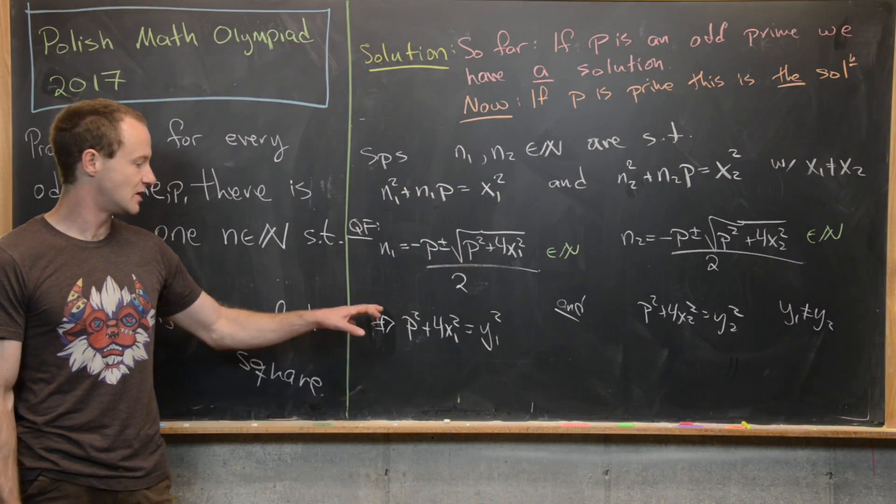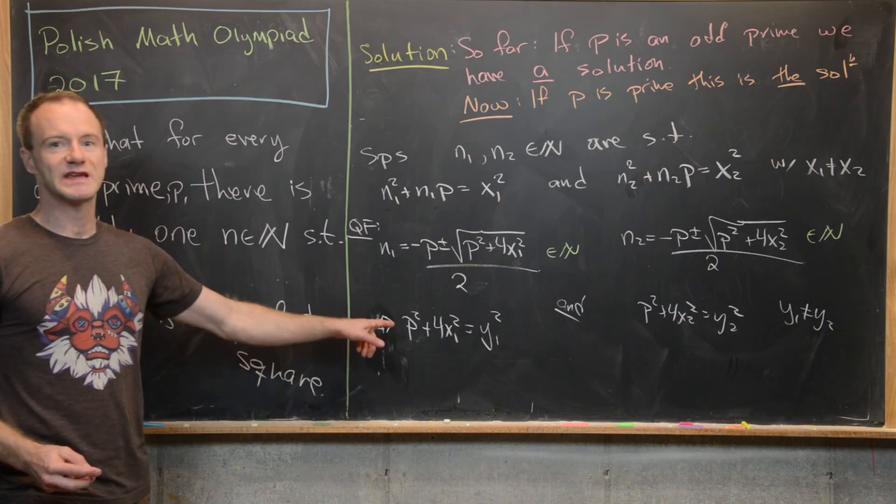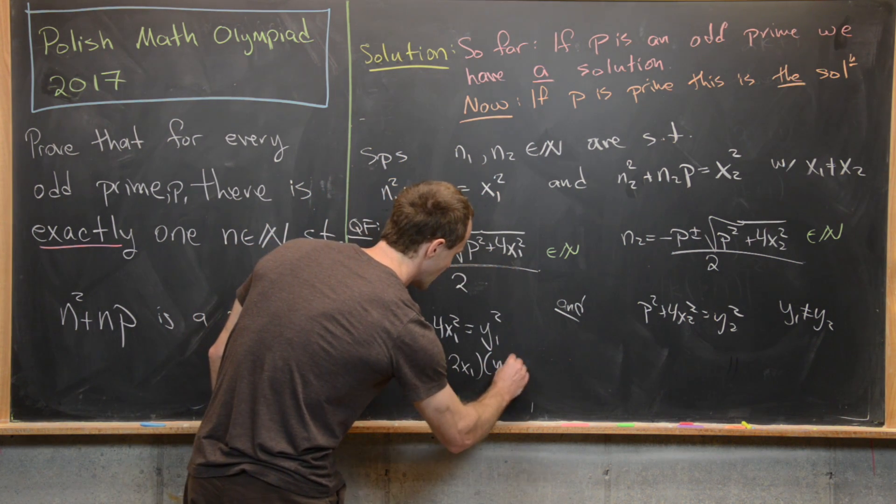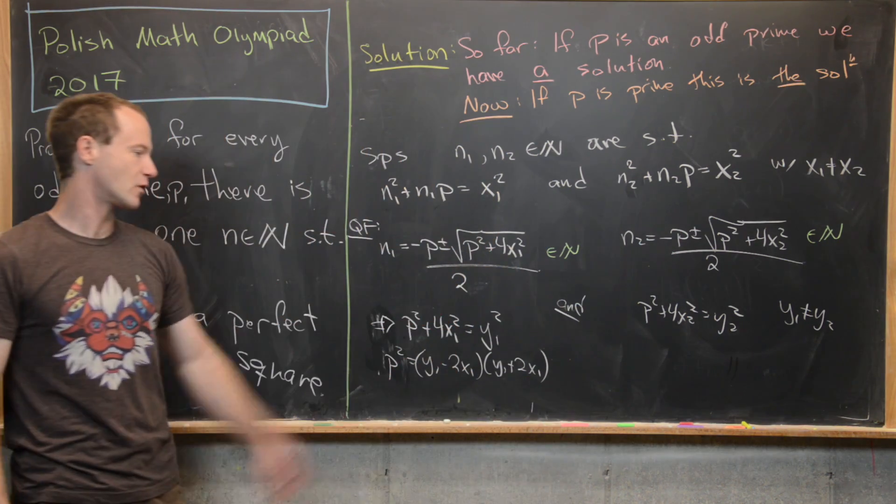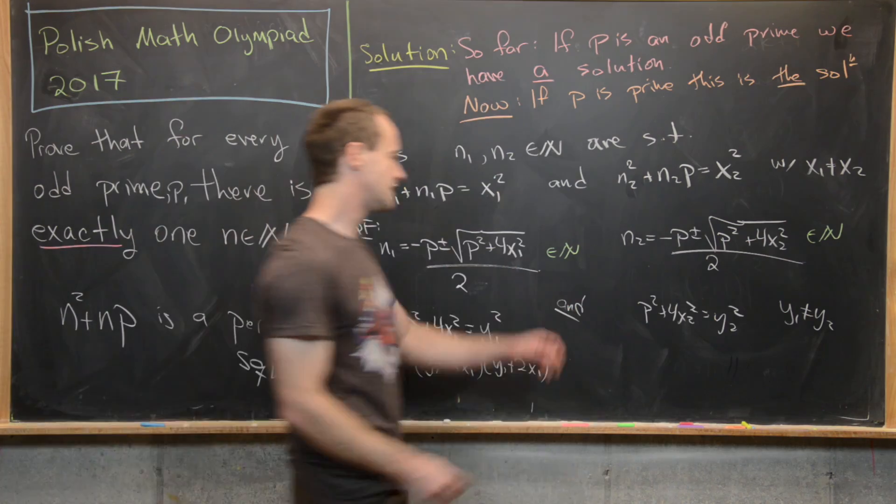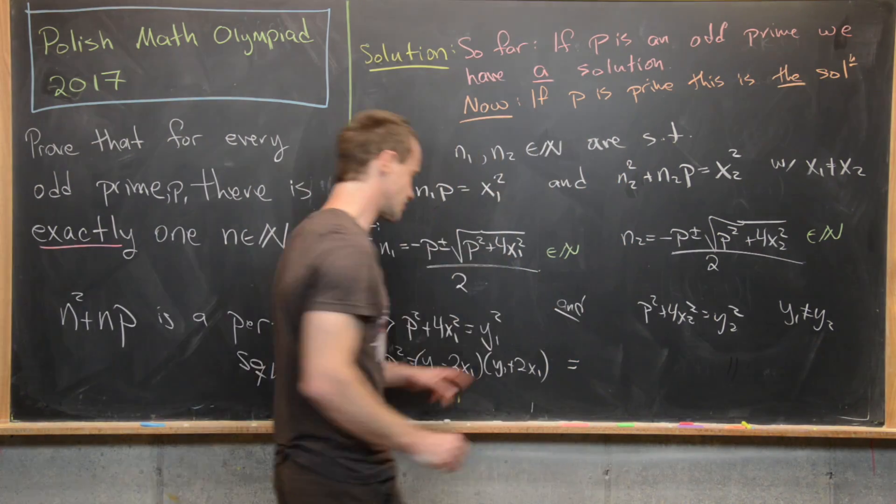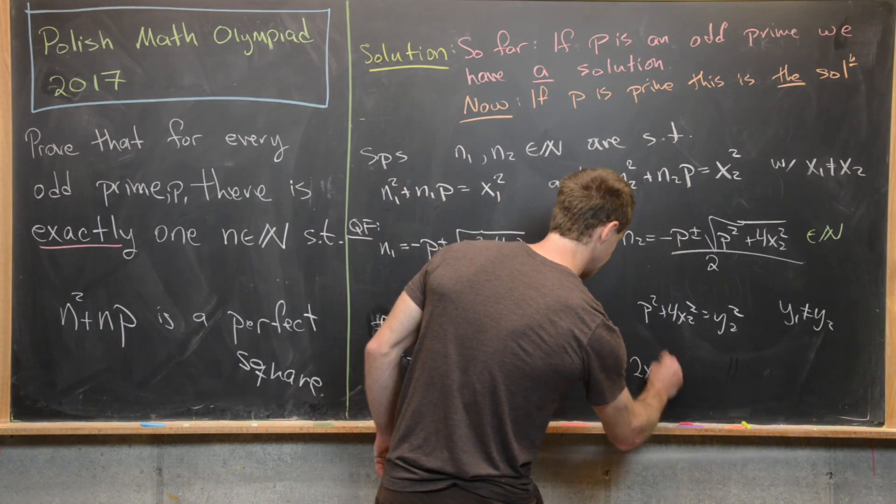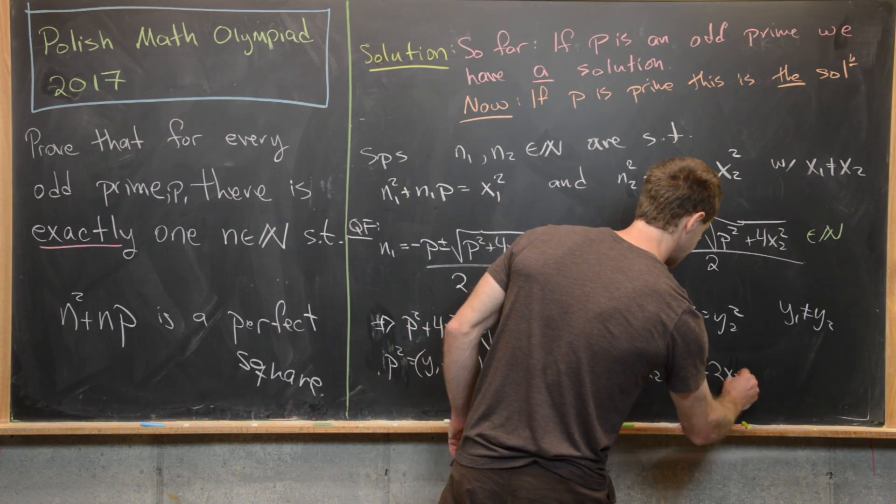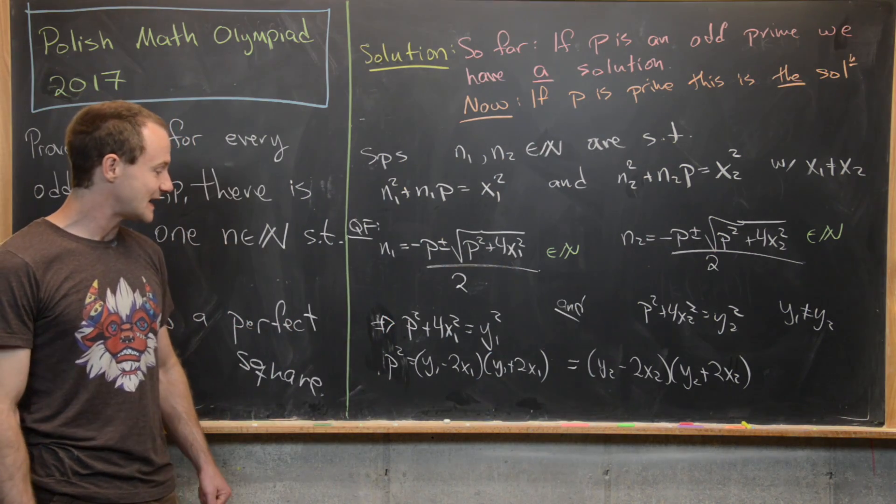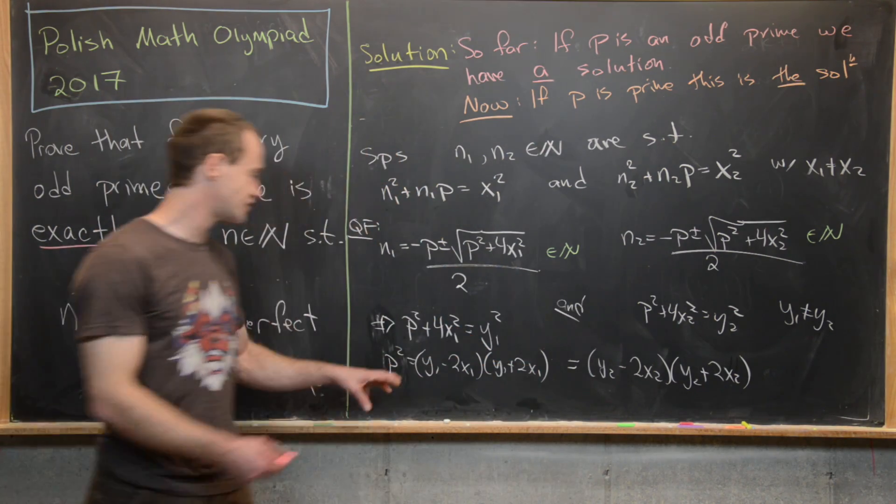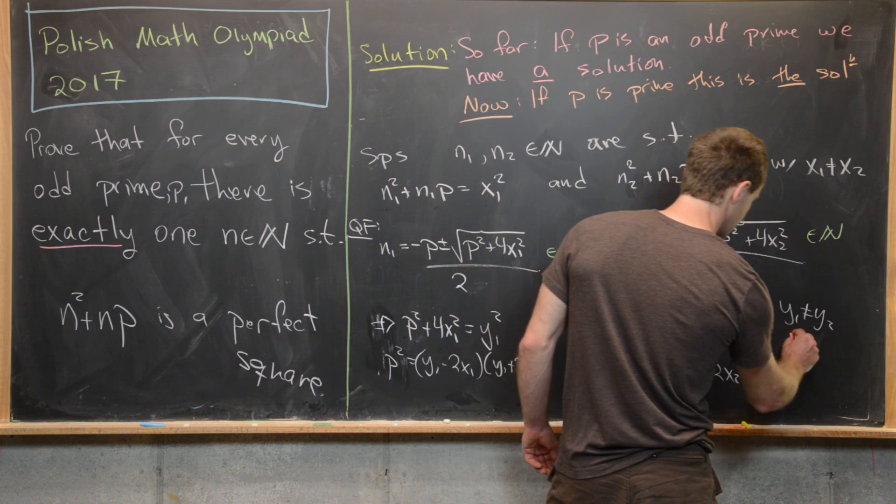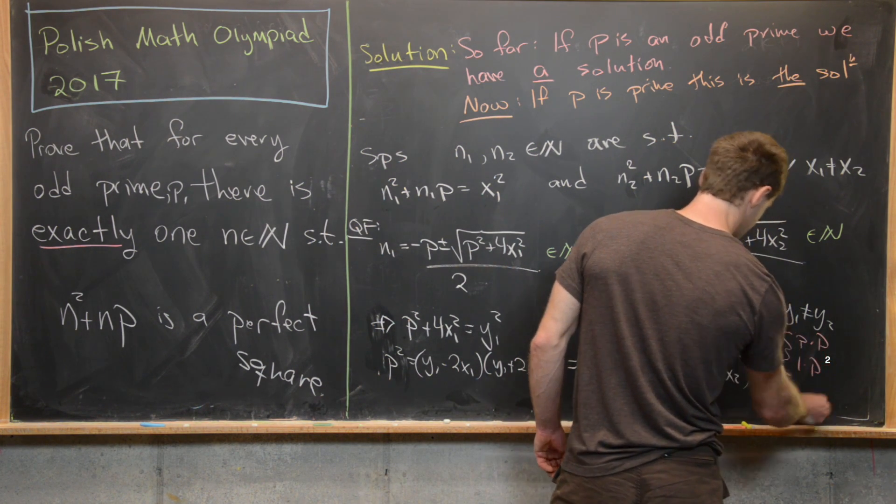Okay, and now we just have to show why that is a problem regarding the primeness of p. So now we can take this one and rearrange it to write p squared equals y one minus two x one times y one plus two x one, just moving that four x one squared over and then doing a difference of squares factoring. Then similarly, we can do the same thing over here. I'll just continue the equal sign on, so we'll have y two minus two x two and then y two plus two x two. Good. But now since p is prime, we know that this factorization is either p times p or one times p. That's the only way that p squared can factor. So let's maybe go ahead and put that up here: this is either p times p or one times p.